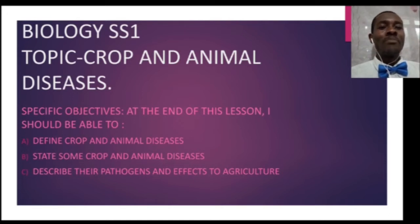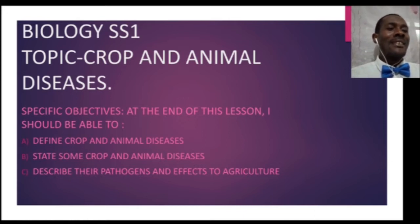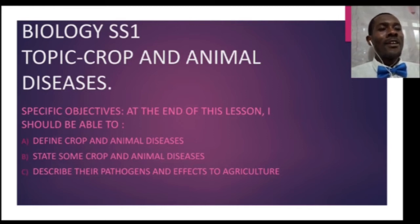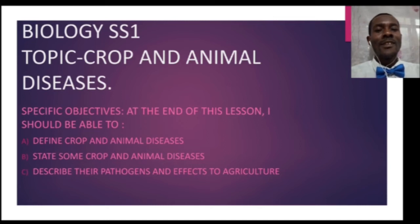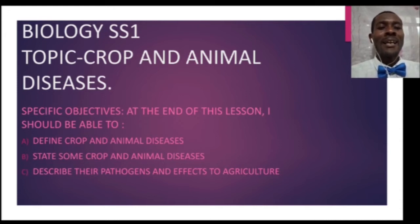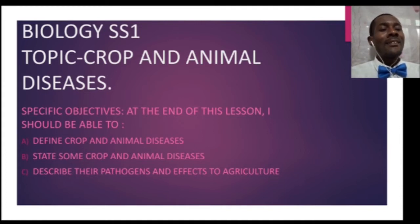As we go into our beautiful topic — crop and animal diseases — this is an extension of our last topic. We've been treating pests and diseases of farm animals and today we'll do an extension for that. Our specific objectives: at the end of this lesson, I should be able to define crop and animal diseases, state some crop and animal diseases, and describe their pathogens and effects to agriculture.